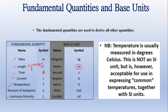Current is measured in amperes; its symbol is capital I. The symbol for amperes is capital A. Temperature is measured in Kelvin; the symbol for temperature is capital T, and the symbol for Kelvin is capital K.